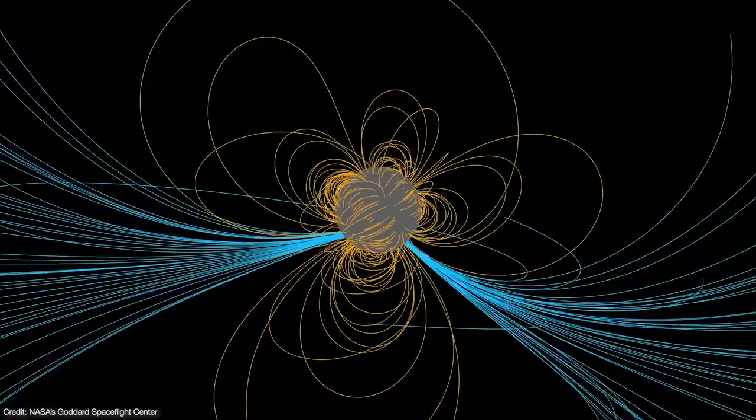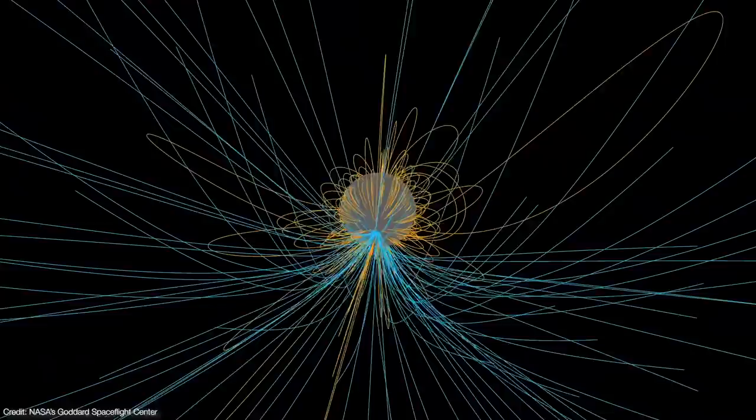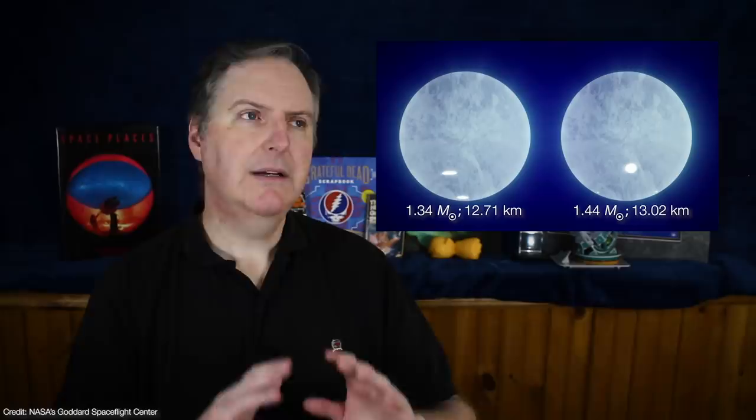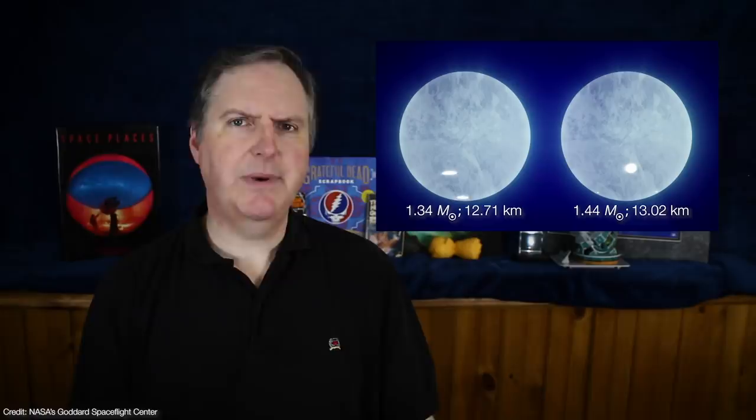However, the NICER data revealed two distinct repeating pulsar components, so both teams were able to test models with two hot regions on the star surface while varying their location and shape to include ovals and crescents. The fact that both results are similar to each other strongly suggests that there's a real non-canonical magnetic dipole on J0030.